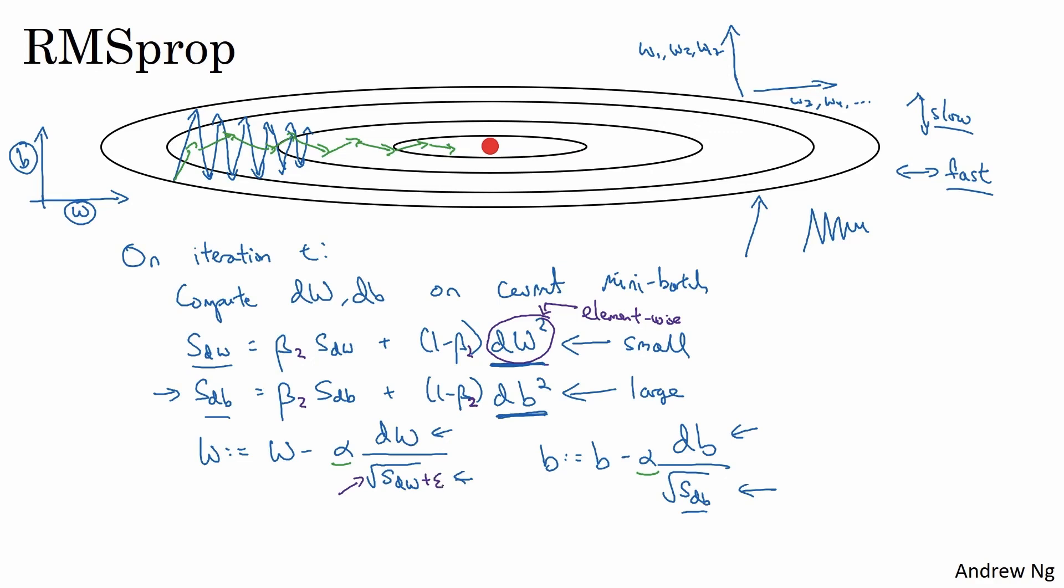When you implement this in practice, you add a very, very small epsilon to the denominator. It doesn't really matter what epsilon is. You could use 10 to the negative 8 would be a reasonable default, but this just ensures slightly greater numerical stability that you don't end up dividing by a very small number.